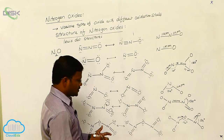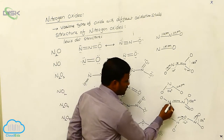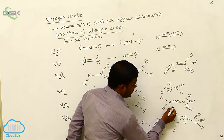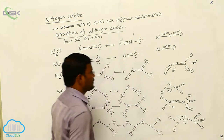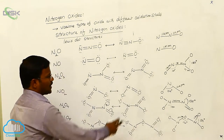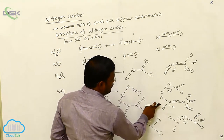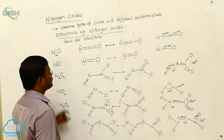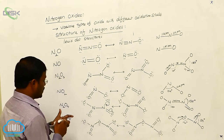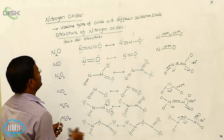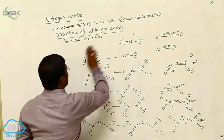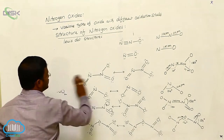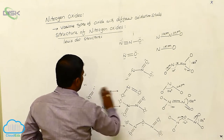This is the most important one. Here the bond angle is nearly 107 degrees. Like in this case, here also the bond angle is 107 degrees. These are Lewis dot structures of nitrogen oxide.